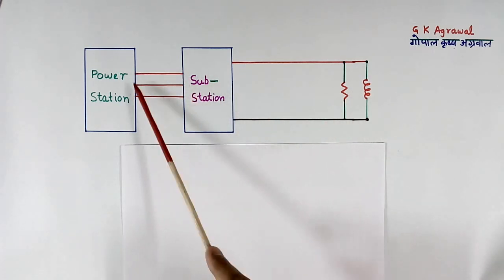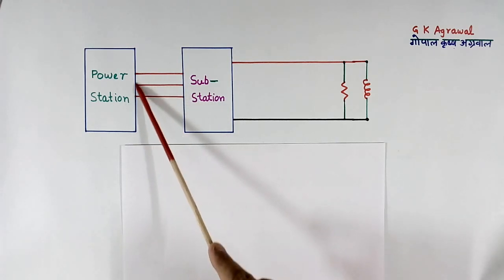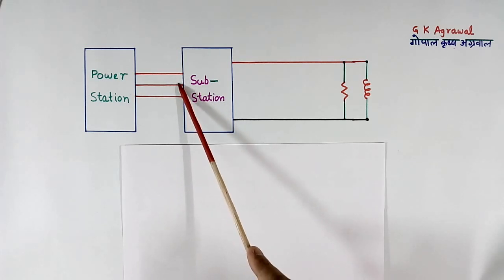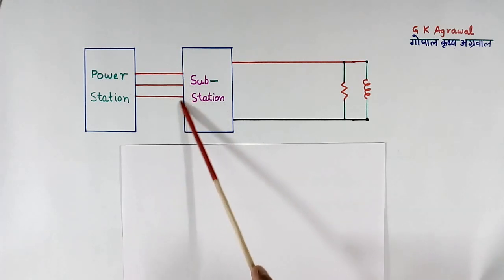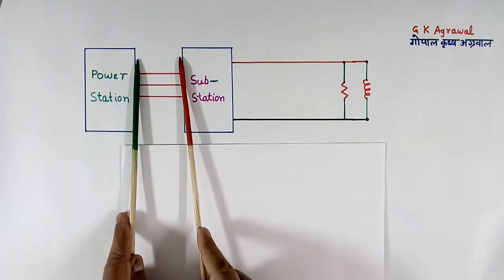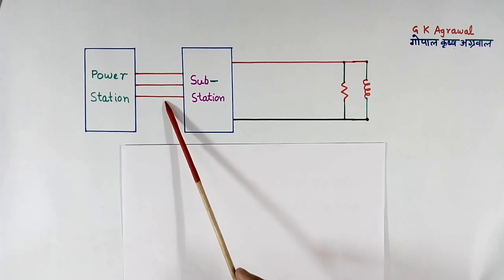In this transmission line, there will be one step-up transformer here and one step-down transformer here, which I have not shown. And length of this transmission line may be 100 km, may be 200 km, may be 300 km or something else.